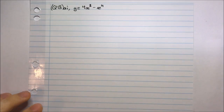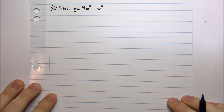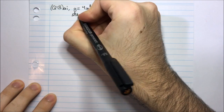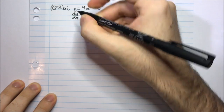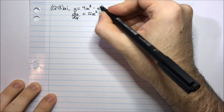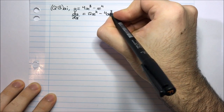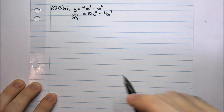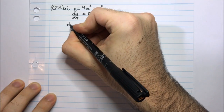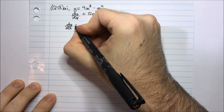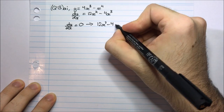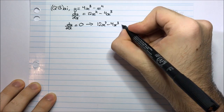Here's our function, and we need to find the stationary points and determine their nature. To find stationary points, we look at the first derivative. Differentiating this function gives us 12x squared minus 4x cubed. To find the stationary points, we set the first derivative dy/dx equal to 0. So when dy/dx equals 0, that's 12x squared minus 4x cubed equals 0.